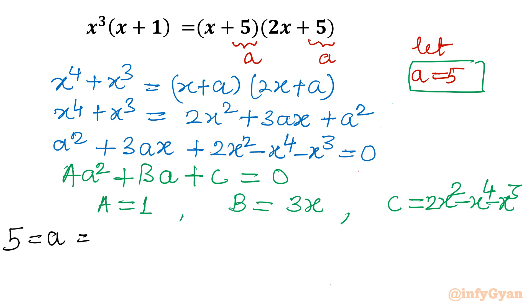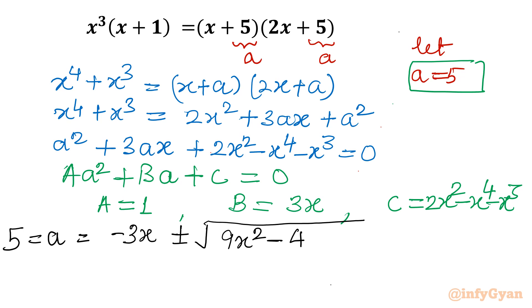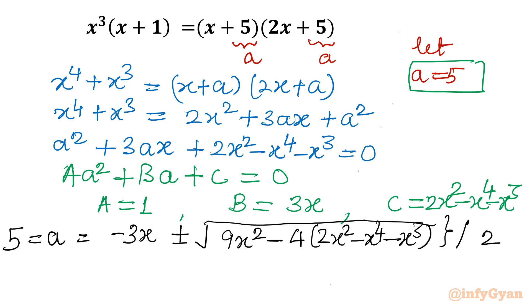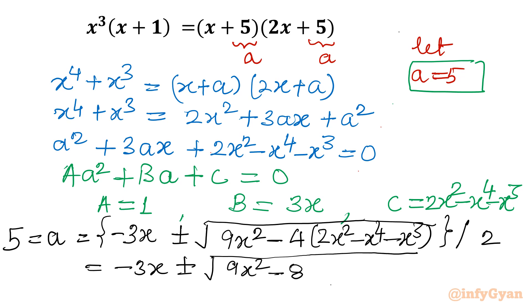Applying the formula: a (which is 5) equals minus b, so minus 3x, plus or minus square root of b² − 4ac. That gives us 9x² minus 4 times 1 times (2x² − x⁴ − x³), all divided by 2a, which is 2. Expanding inside the square root: 9x² − 8x² + 4x⁴ + 4x³, divided by 2.